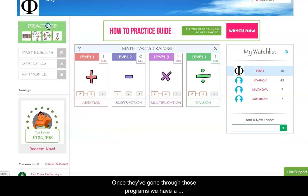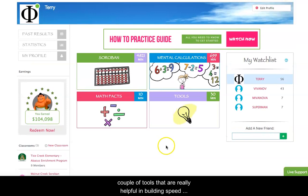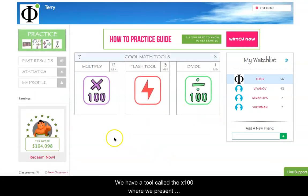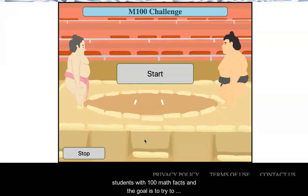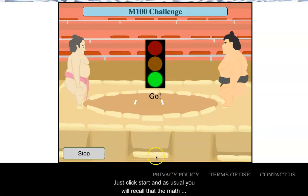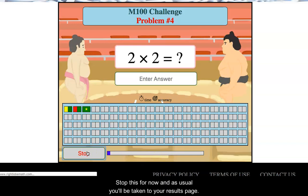So once they've gone through those programs, we have a couple of tools that are really helpful in building speed recalling these facts. And in particular, we have a tool called the Times 100 where we present students with 100 math facts. And the goal here is to try to answer or recall all 100 facts within three minutes. So you just click start. And as usual, you will just recall the math facts from memory and punch in the answer and continue through all 100 facts as fast as you can. So I'll go ahead and stop this for now.